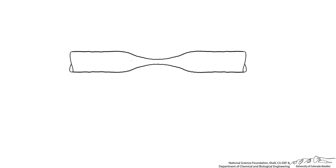Let's consider a constriction that looks like this. There's an inviscid fluid flowing from the left. It flows through this constriction, and then it exits through this widened area off to the right. If we were to examine the streamlines of the air through this, we'd see horizontal streamlines on the left, flowing in parallel into the left, and horizontal streamlines exiting to the right.